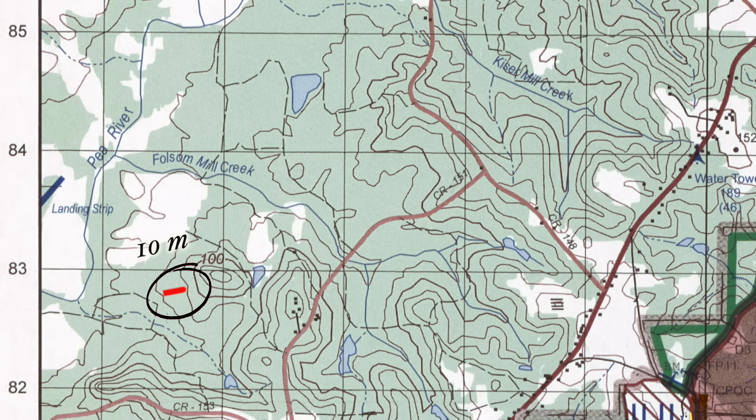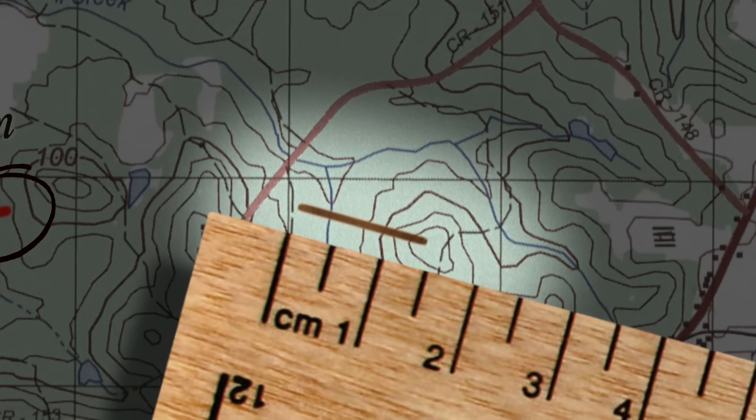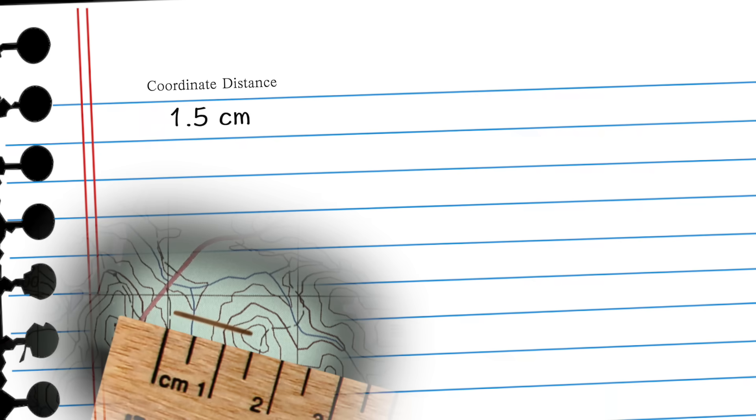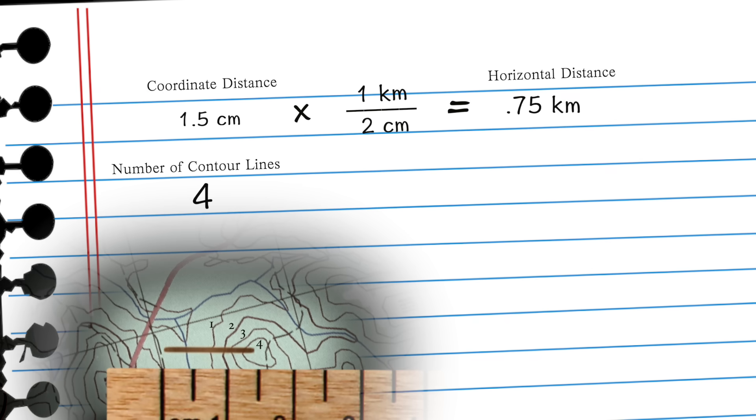Thus, for a given path on the map, to find the total distance covered on the ground, you have to not only convert the coordinate distance of the path into real-world horizontal distance, but you also have to count the number of contour lines crossed by the path to determine that path's change in vertical distance.